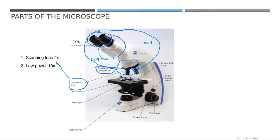The third one is called the high power objective lens — it has 40 times power. The last one, the longest one, is called the oil immersion lens and it has 100 times power. So there are four objective lenses: scanning (4x), low power (10x), high power (40x), and oil immersion (100x).